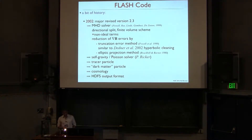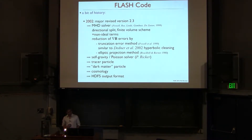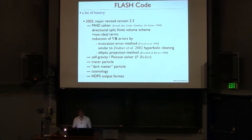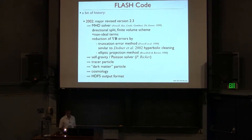There is also a different method to get rid of div-B errors by an elliptical projection method, where you look for magnetic monopoles and dilute them with time and space. This version also included a module for self-gravity, thanks to Paul Ricker, which is important for star formation and collapsing situations. It also included tracer particles, or particles which can be used as dark matter potential for cosmological simulations, and at this version they already supported the output format of HDF5.